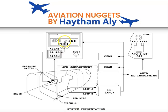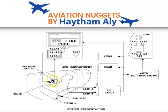We have one fire pushbutton for the APU on the overhead fire panel, and also one agent pushbutton, because the APU is protected by one fire bottle. Unlike the engine, only one fire bottle is available to protect the APU compartment and extinguish any fire that happens in the APU.